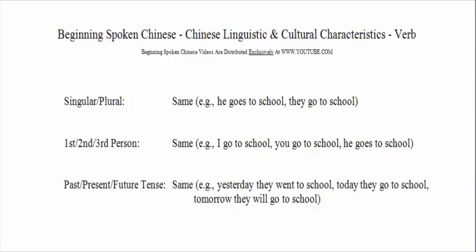For example, 'yesterday they went to school' — you use the verb 去. 'Today they go to school' — you also use the same verb 去. 'Tomorrow they will go to school' — you also use the same verb 去.